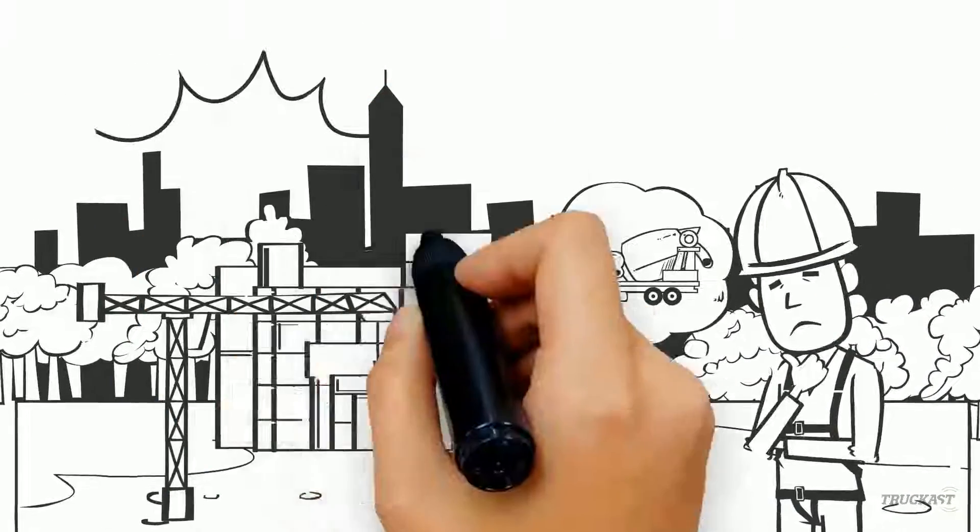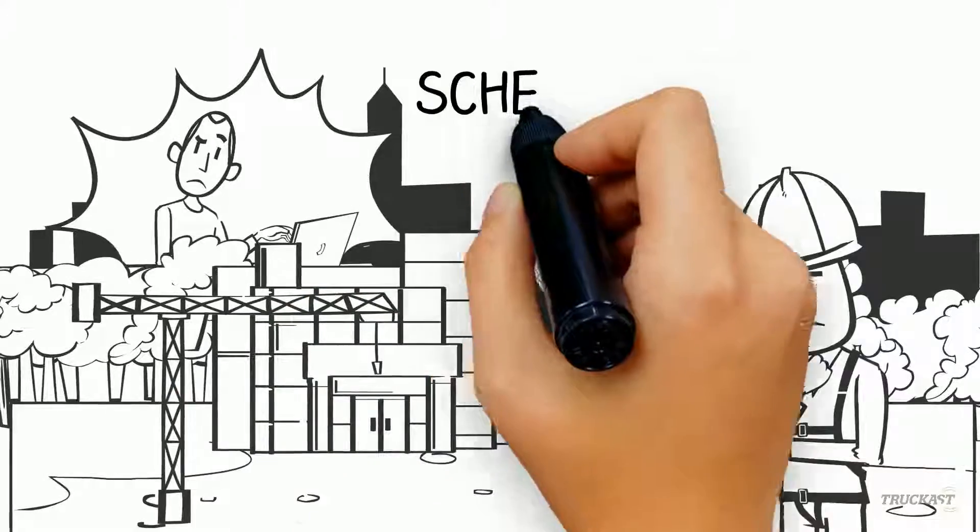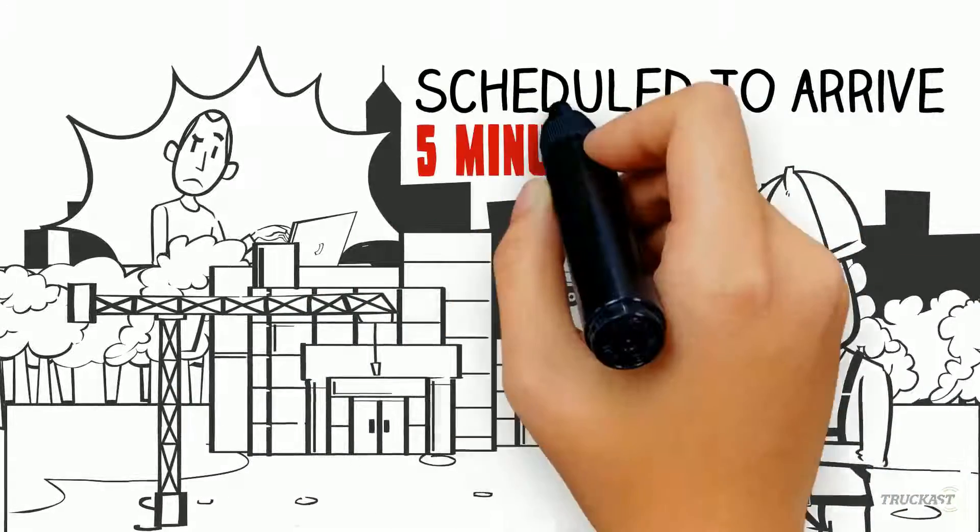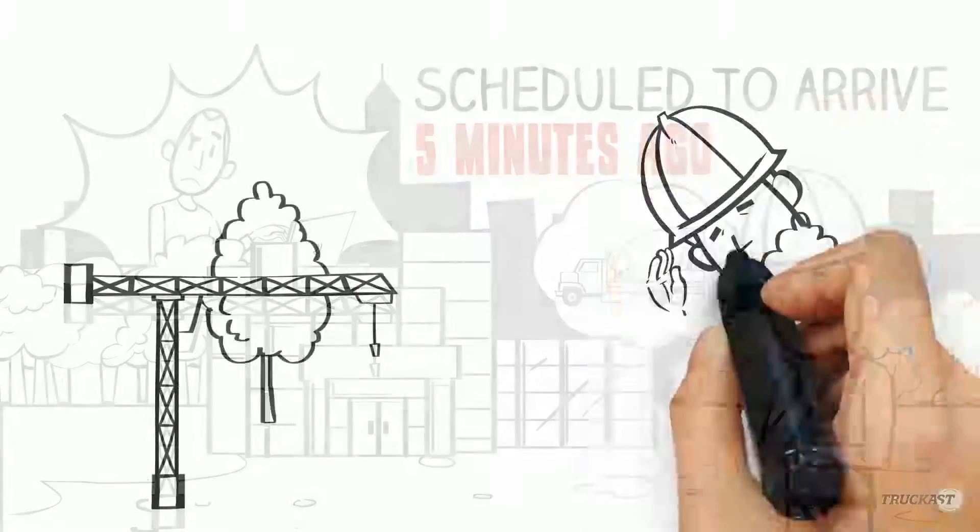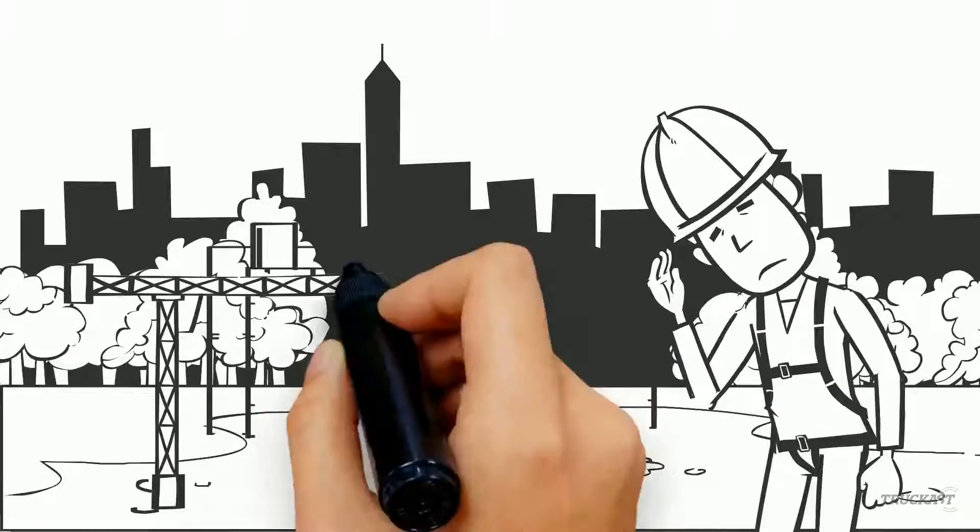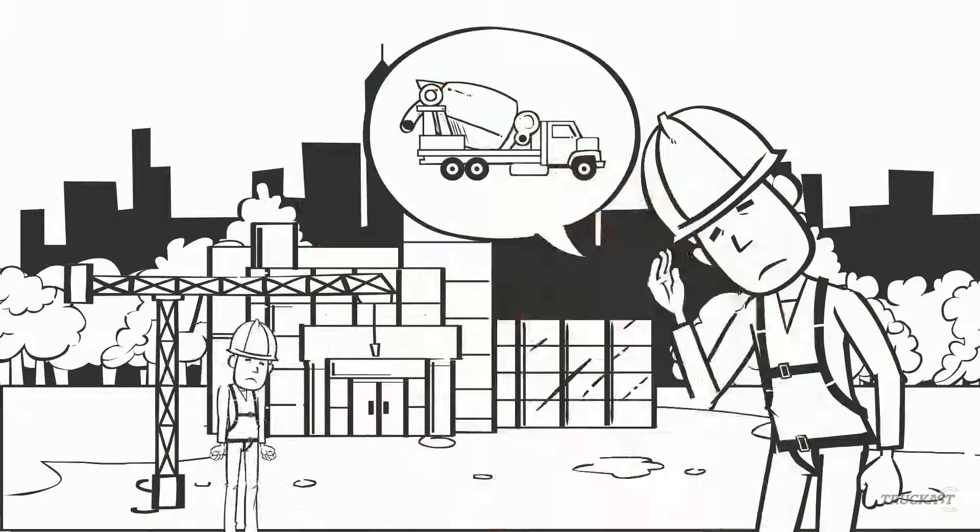Meet Matt. Matt is the contractor who is waiting for the concrete that Rich is producing which was scheduled to arrive five minutes ago. Matt is getting stressed since he has a large crew on the job and he does not see the concrete truck.